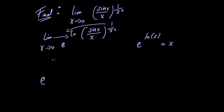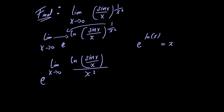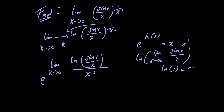So we have e raised to the limit as x approaches 0 of the natural logarithm of sin of x divided by x, divided by x squared. Now if we were to let x go to 0, in the numerator we would just have the natural logarithm of the limit as x goes to 0 of sin of x divided by x, and this limit is just equal to 1. So we would have the natural logarithm of 1, which is equal to 0, and of course in the denominator we would also just have 0. So our limit is of the form 0 over 0.